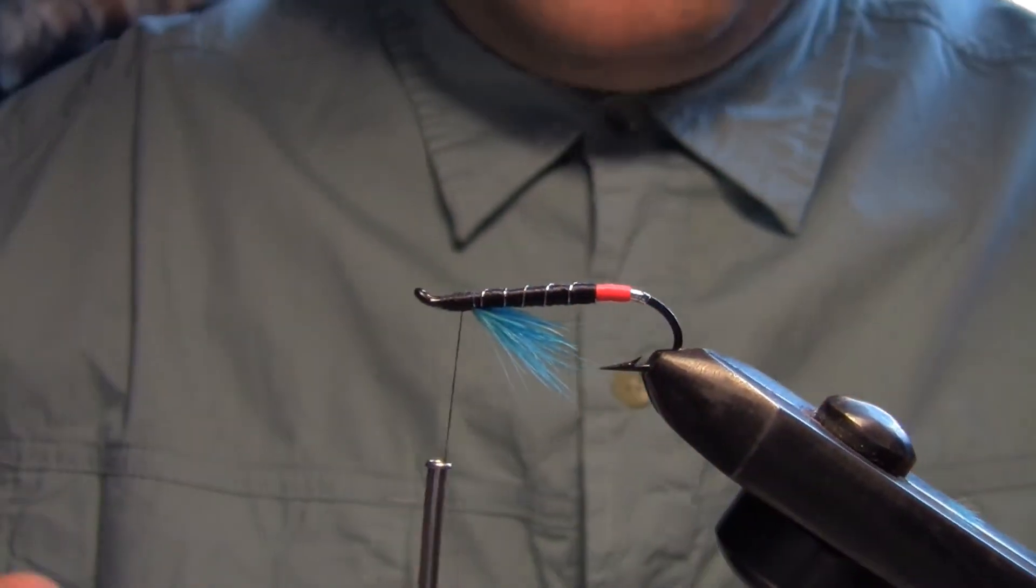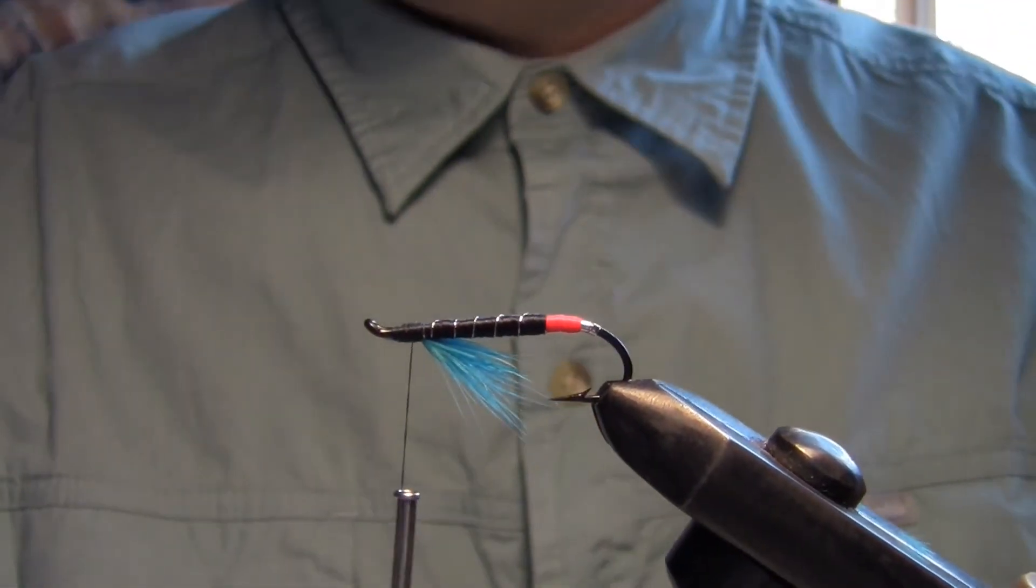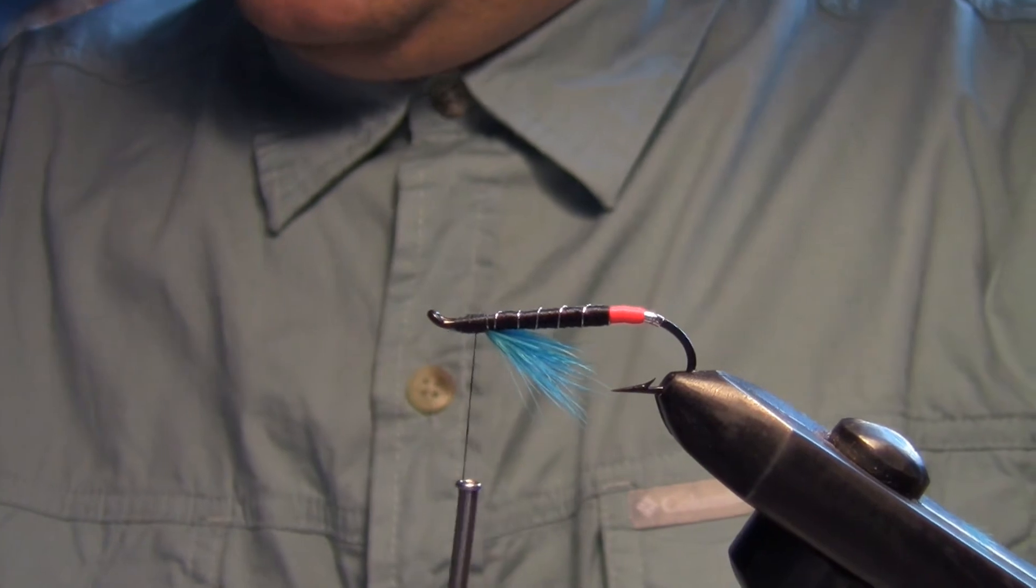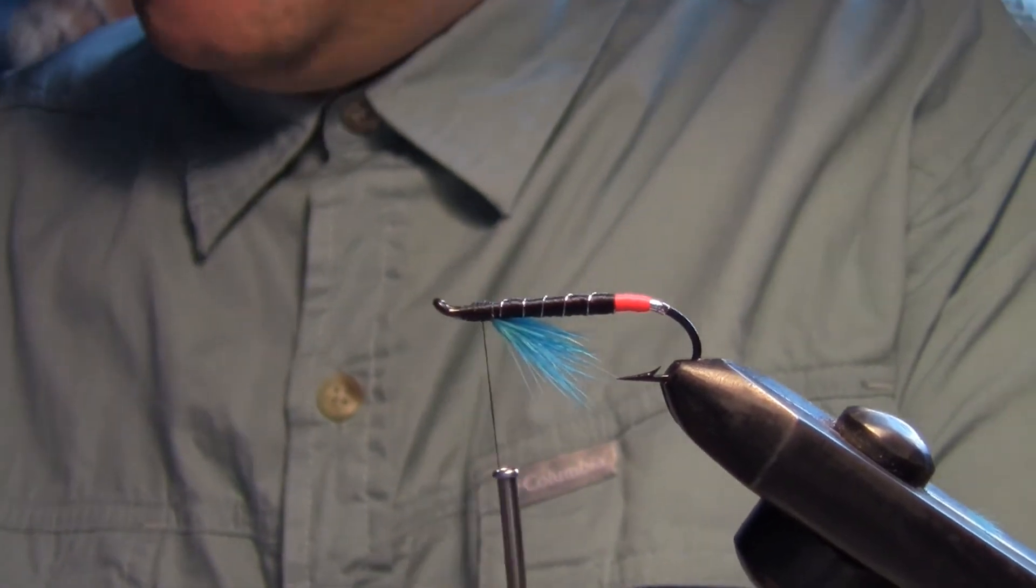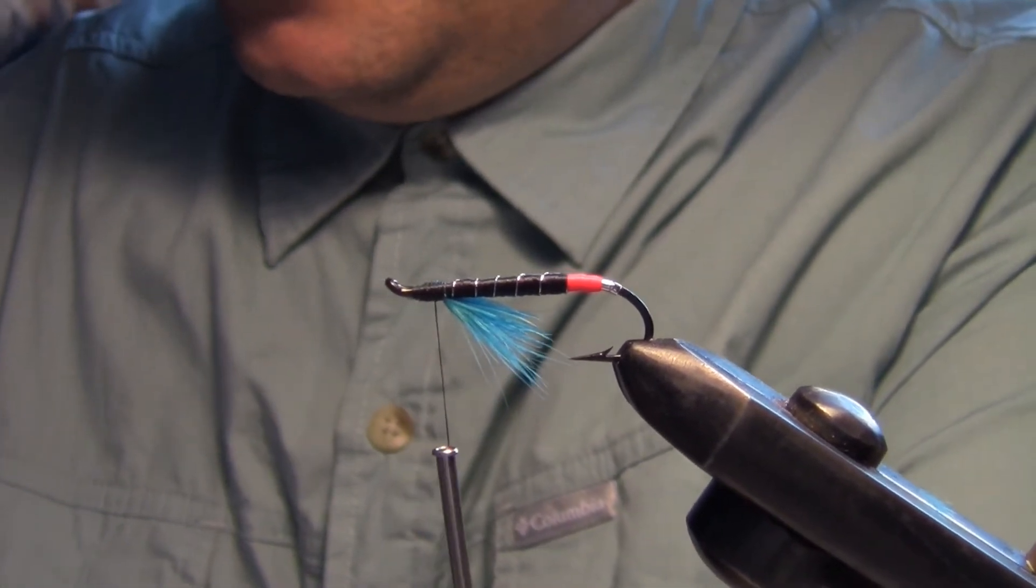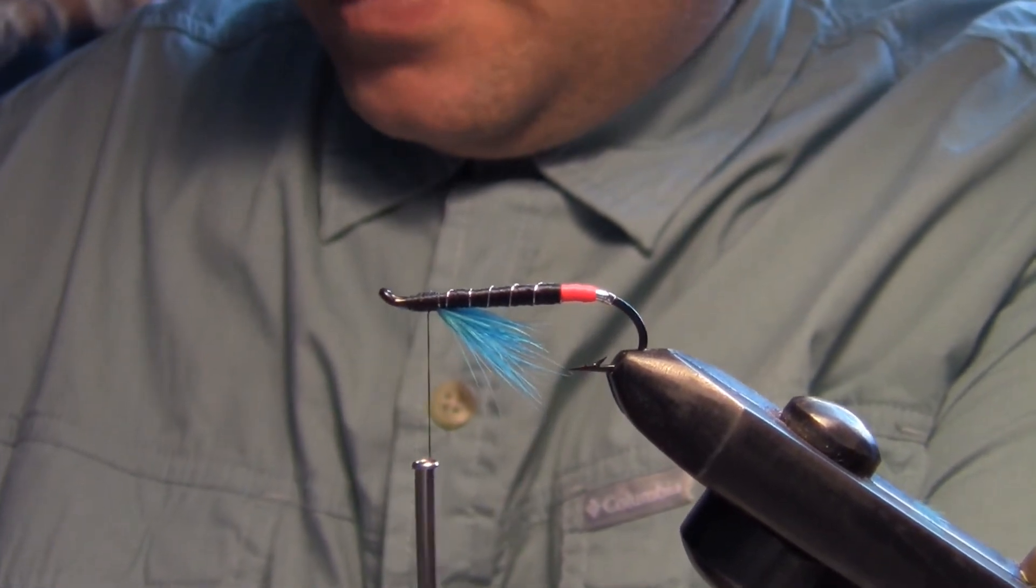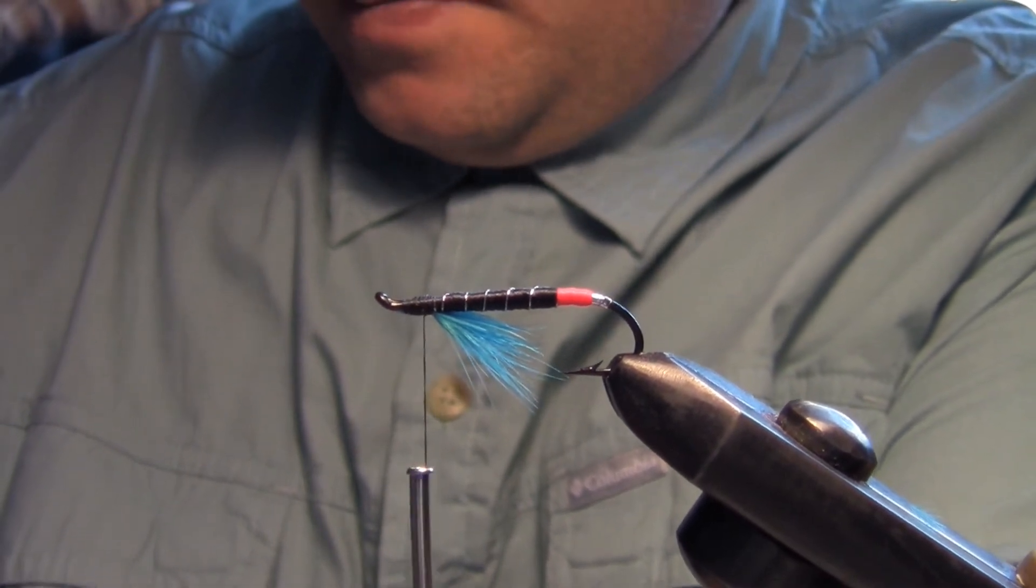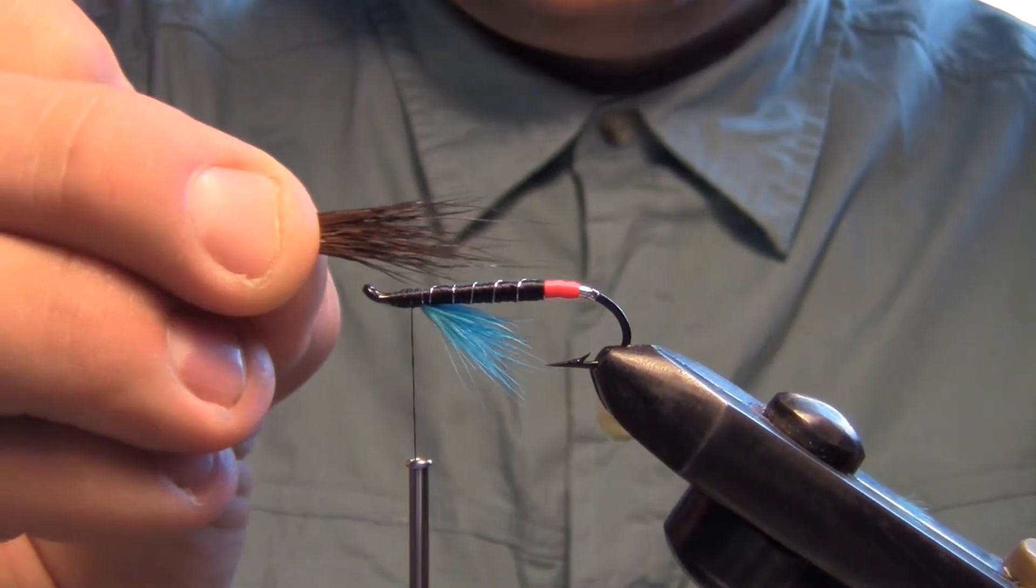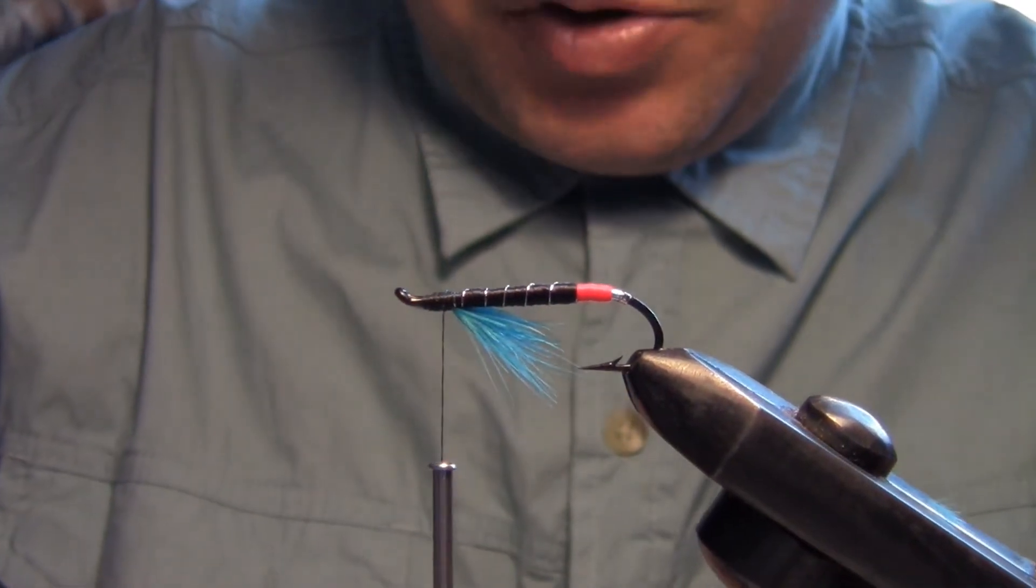Now for a little bit of moose hair. I'm going to take a little bit of moose hair here and just trim off a little bit, put it in my stacker, get all the ends even. I'm not going to make a real big wing on this, just a little bit of hair there sticking out. So I'll take a little bunch like that, and I'll thin it out and put it in a stacker.